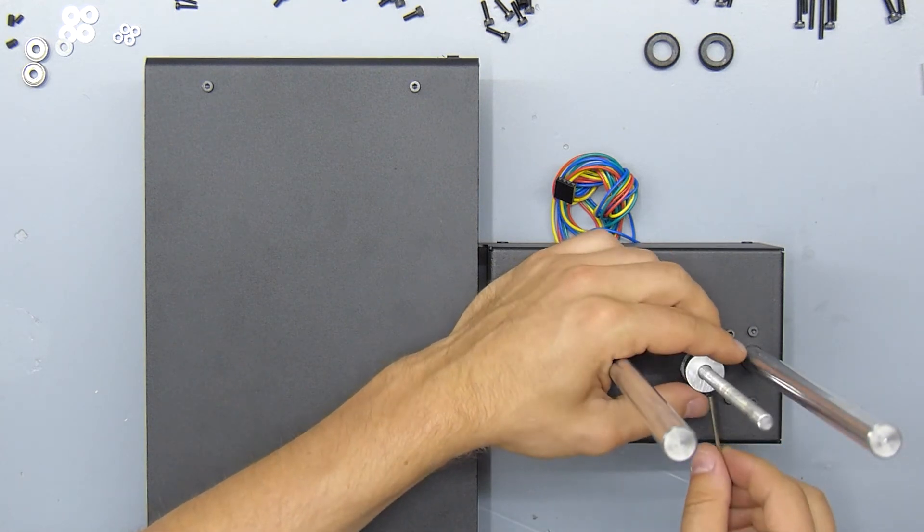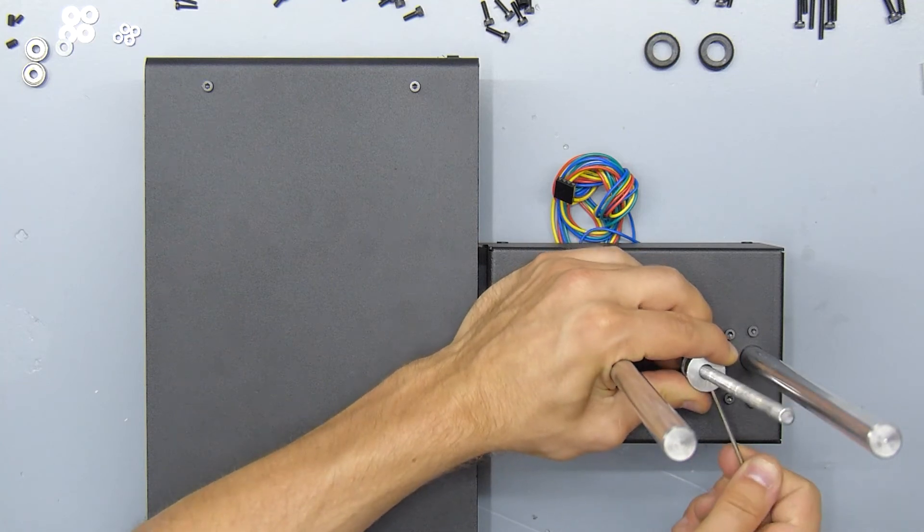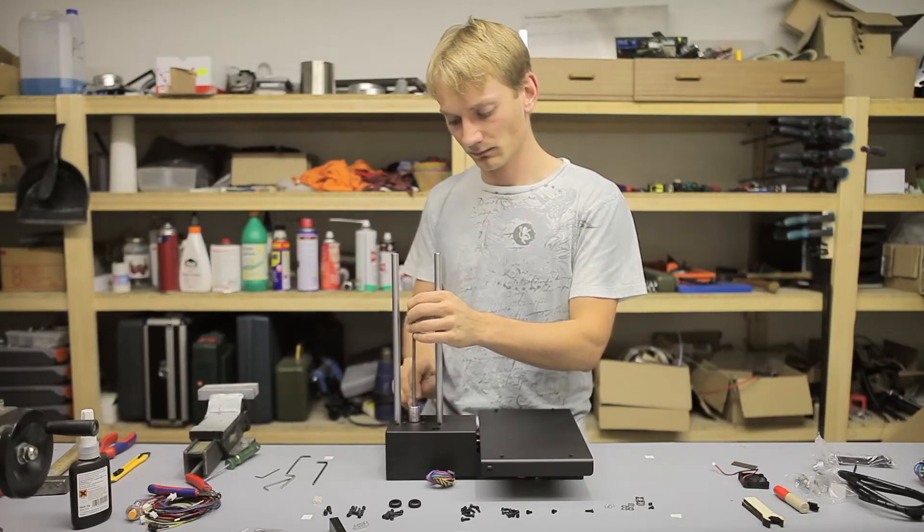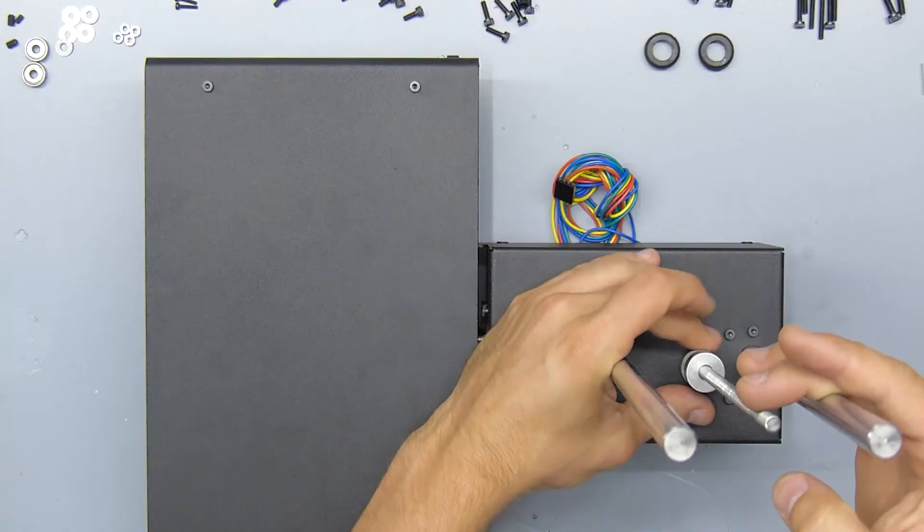Now, if you got the upper grub screw in just the right spot, you can thread in the lead screw. But either way, the coupler should be pressing the lead screw onto the motor shaft.